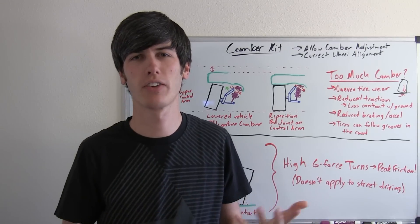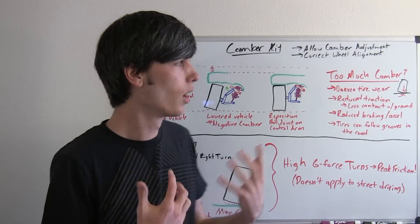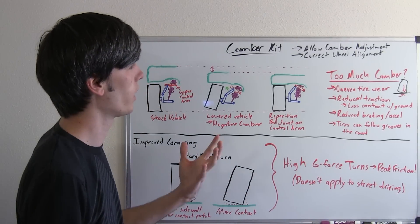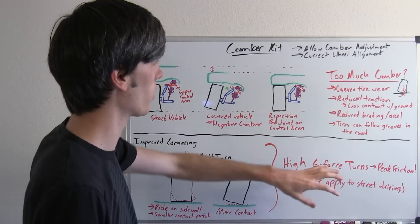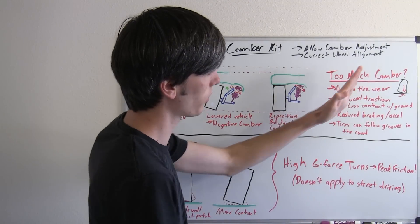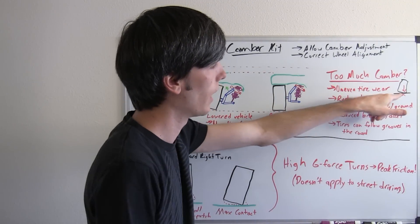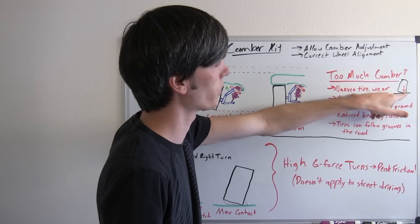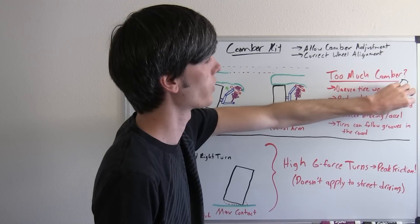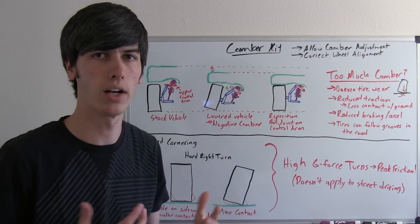Now if you lower your vehicle significantly and you have too much negative camber, why would you want to get rid of that? Well, several things. If you have too much camber, first of all you're going to have uneven tire wear. Since the tire is going to be resting on that inner edge, putting primarily most of the weight on that inner edge, that inner edge is going to wear more than the other side.